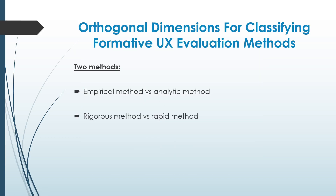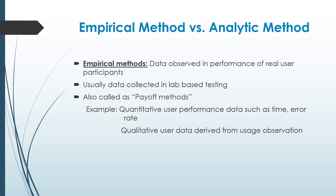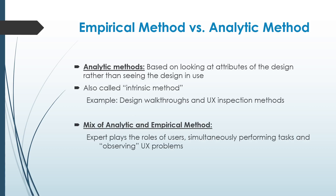The next topic is orthogonal dimensions for classifying formative UX evaluation. There are two methods: empirical versus analytical, and rigorous versus rapid. Empirical method says that you observe the data in the real environment, for which lab-based testing is required — and we can do both quantitative as well as qualitative testing. Analytical method says that you describe the attributes of the design and not the actual usage, which is why it is called an intrinsic method.